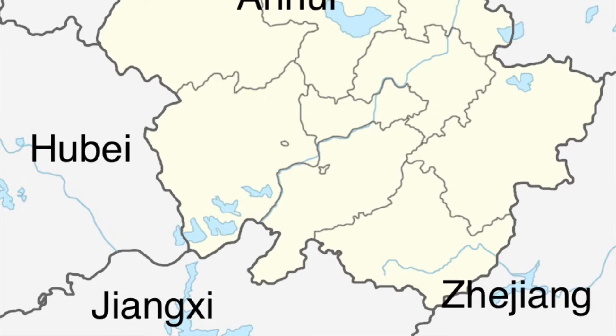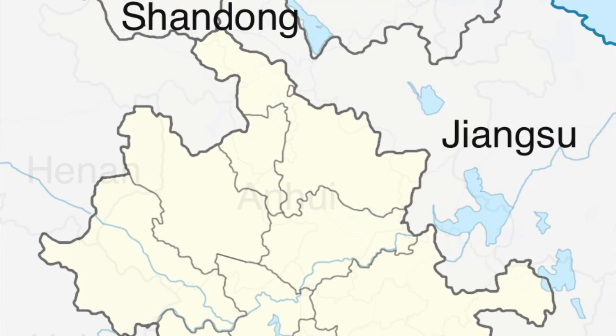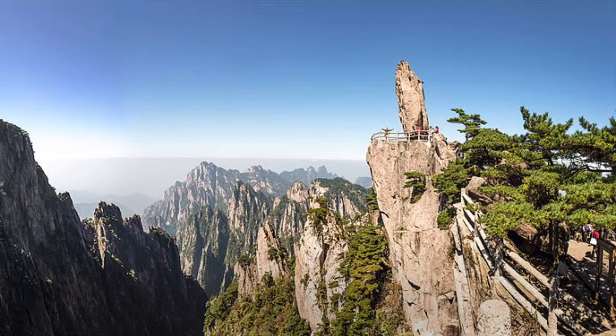First, Anhui in eastern China. Anhui province borders Zhejiang to the southeast, Jiangxi to the south, Hubei to the southwest, Jiangsu to the northeast, and if you look up here, there's a tiny little border with Shandong. The capital and largest city is Hefei. Probably the most famous thing in this province is Yellow Mountain, or Huangshan in Chinese, which is famous for its rock formations and pines and is one of the most popular tourist destinations in all of China.